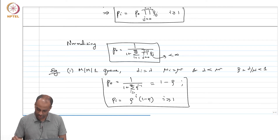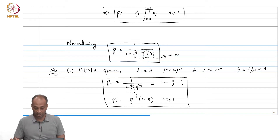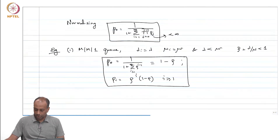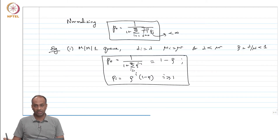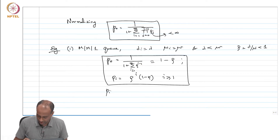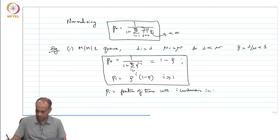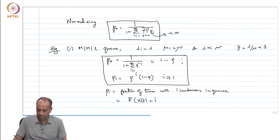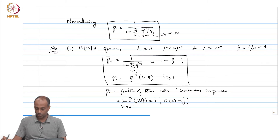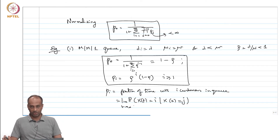So 1 minus rho is the probability that there are 0 customers in the M/M/1 queue. P_i has the interpretation of either the fraction of time with i customers in the queue, which equals the probability that X(t) equals i, given X(0) equals any j, in the limit as t tends to infinity. So no matter where you start, the probability of having i customers in the queue as t becomes large is P_i, which is rho^i times (1 minus rho).